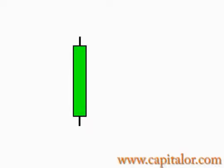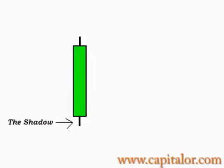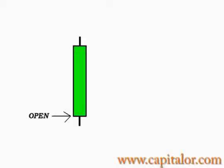The area of the positive candlestick which is green is called the real body. The little line below the real body is called the shadow, and the furthest point of the shadow is called the low. The low is quite simply the lowest price which that specific candlestick did reach. On a positive candlestick, the open is the bottom of the candlestick's real body, and this is the price at which the candlestick first began to form.